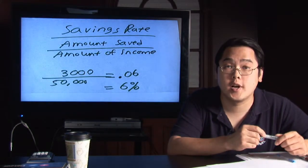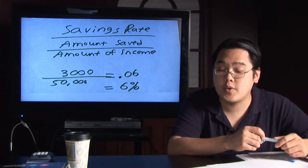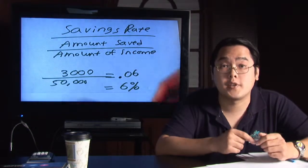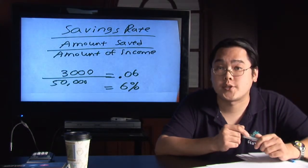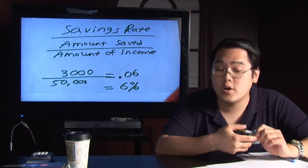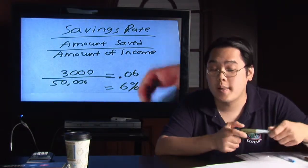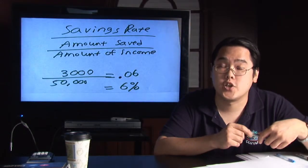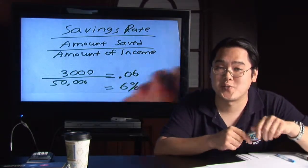You saved 6% of your income. If you're happy with that savings rate, then keep saving $3,000 every year. But if you feel you could save more, then you know what to do for future years. Just save more than $3,000 and you will increase your savings rate.